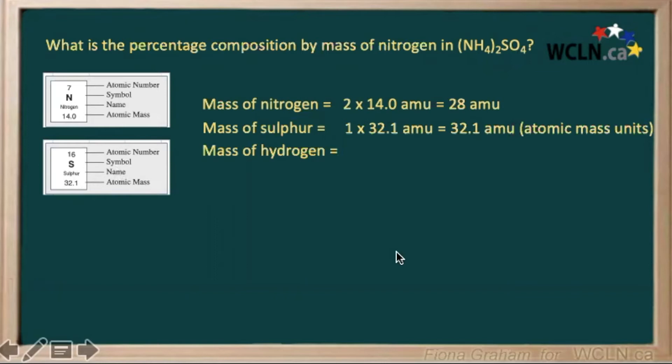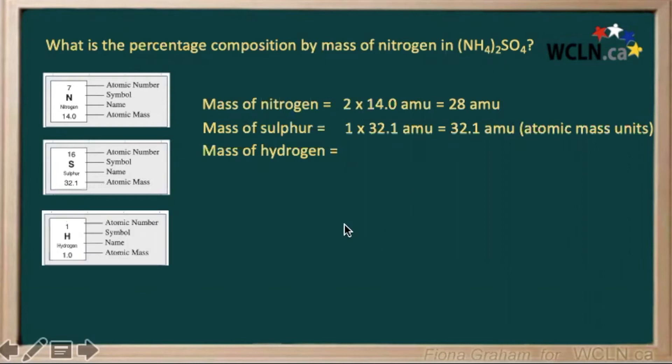The mass of our hydrogen would be equal to eight, because we have two times four here, eight units of hydrogen, where each one has an atomic mass of one, giving us a total of eight atomic mass units.